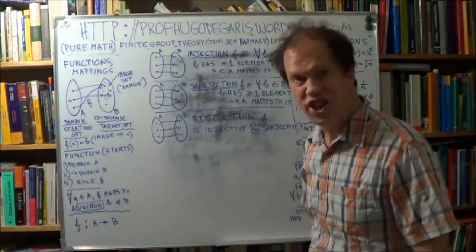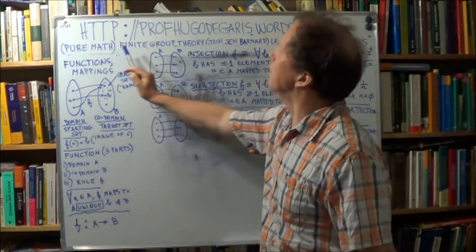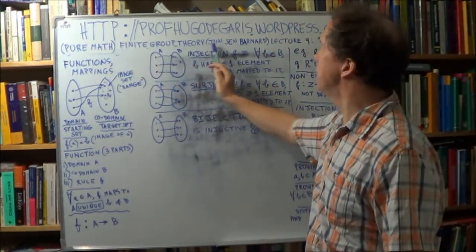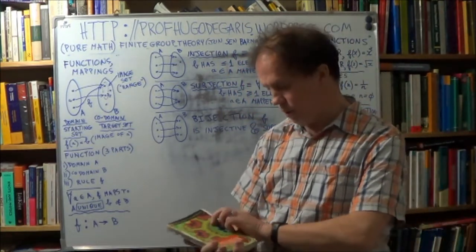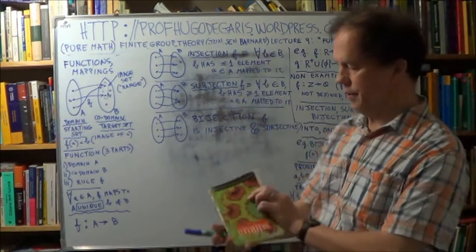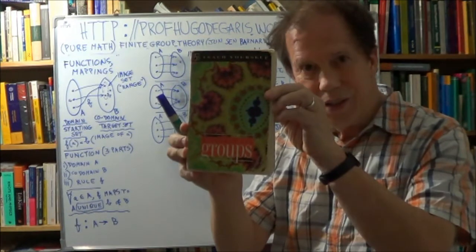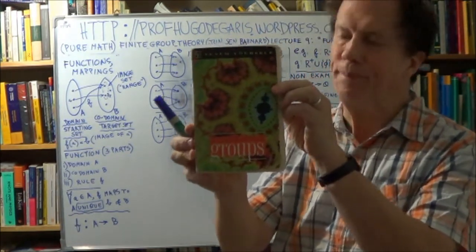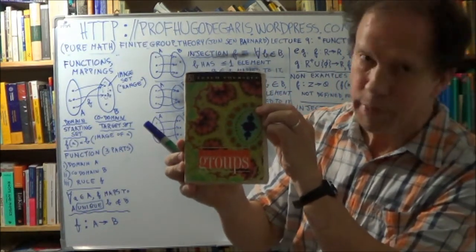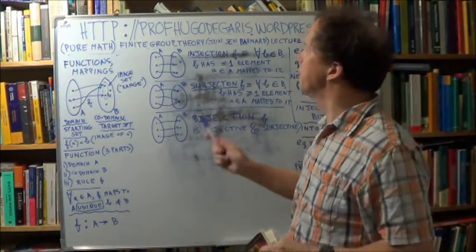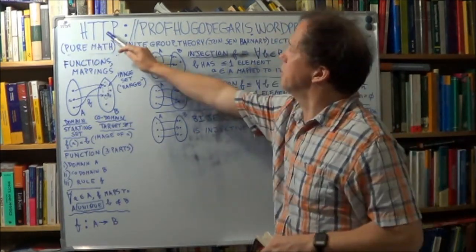This is lecture 9 of a pure math course in finite group theory at junior and senior level. The first author of the text I'm using for this course is Barnard. I do this every lecture or lecture set, as I call them. It's in the Teach Yourself series, and the title of the book is Mathematical Groups. You can find details about this book, how to get it, price, stuff like that, and about the course in general from this website.